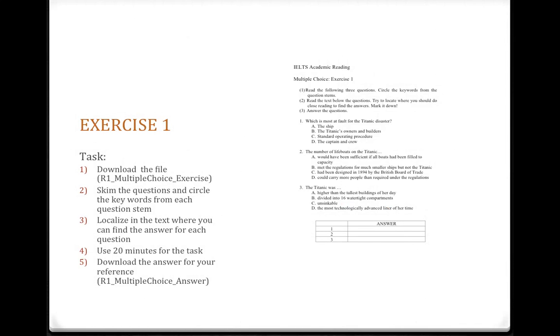Now the teacher will pause the explanation. Students must download the first exercise. The file name is R1, Multiple choice exercise. What students need to do is read through the three questions, circle the keywords in the questions, then go back to the reading passage to find in which paragraphs you can find the answers to these questions. You can only use twenty minutes for the task. You need to time it. In twenty minutes you must finish this reading exercise. Then you can download the answer. The answer file name is R1, Multiple choice answer. Now I'll give the time to students.